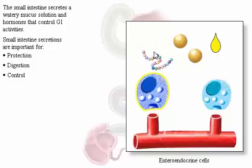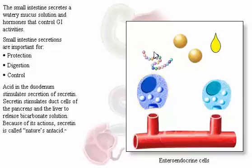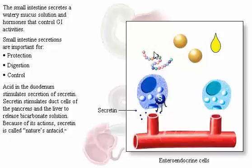Acid in the duodenum stimulates secretion of secretin. Secretin stimulates duct cells of the pancreas and the liver to release bicarbonate solution. Because of its actions, secretin is called nature's antacid.